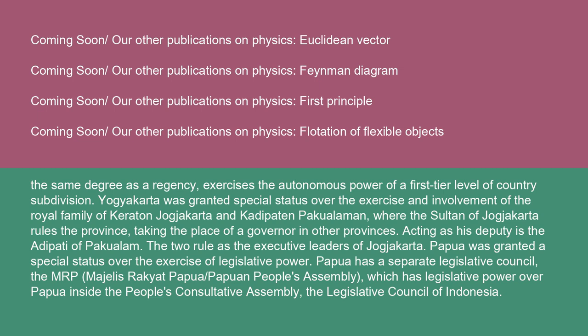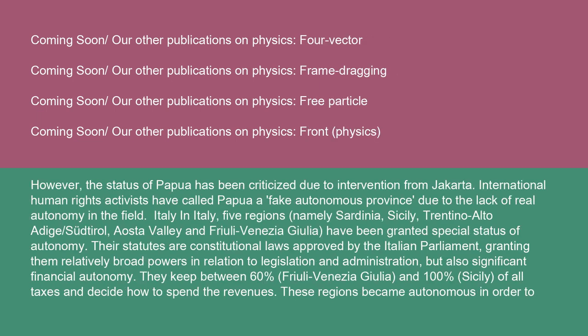Papua was granted a special status over the exercise of legislative power. Papua has a separate legislative council, the MRP (Majelis Rakyat Papua / Papuan People's Assembly), which has legislative power over Papua inside the People's Consultative Assembly, the legislative council of Indonesia. However, the status of Papua has been criticized due to intervention from Jakarta. International human rights activists have called Papua a fake autonomous province due to the lack of real autonomy in the field.